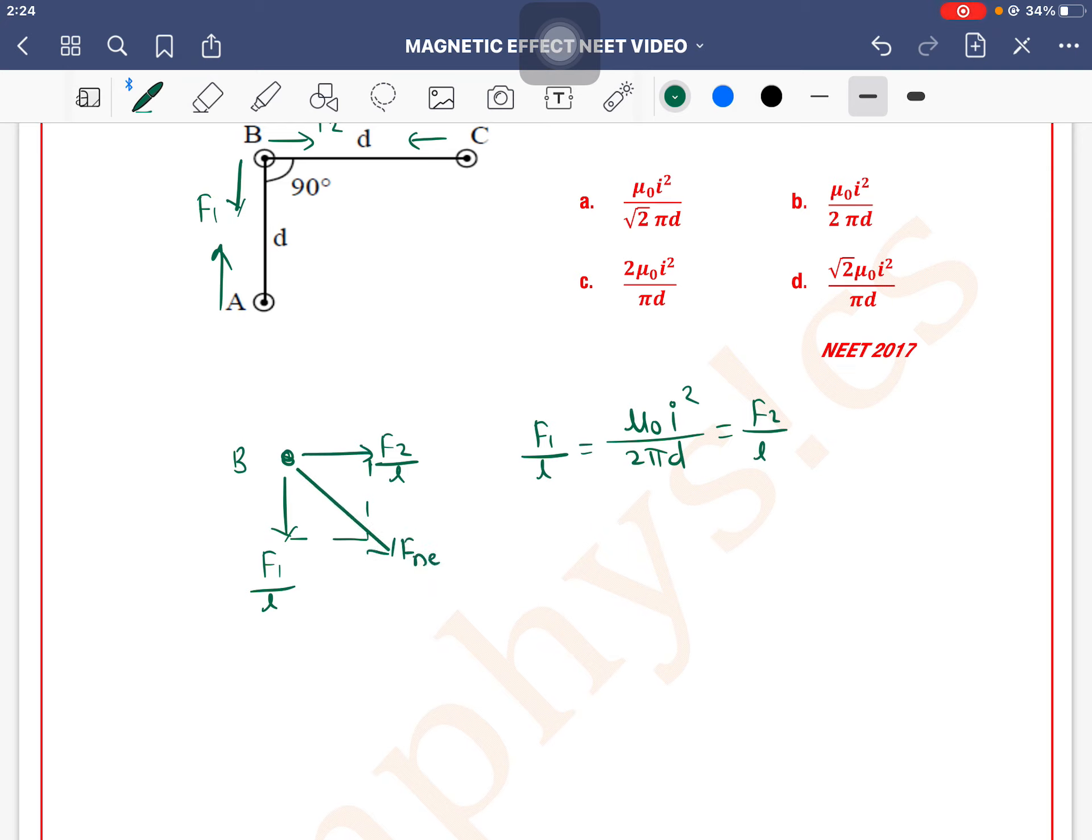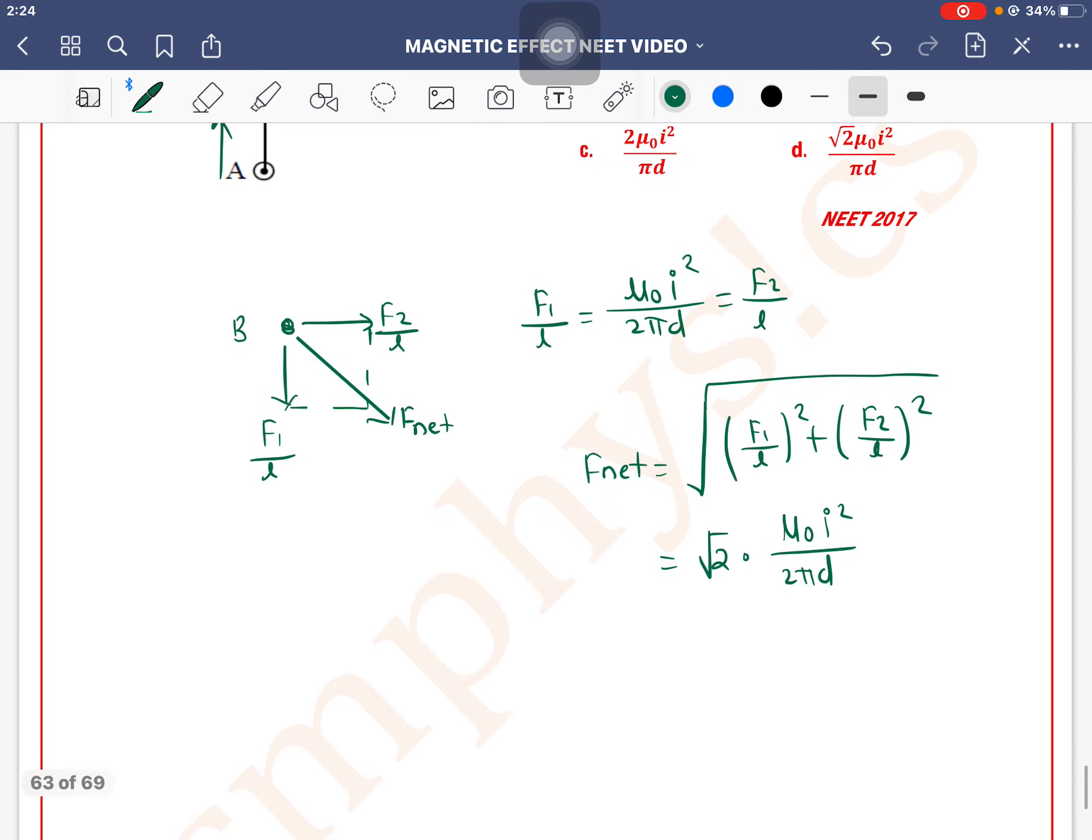The net force will be equal to, by using Pythagorean theorem, under root of F1 by L square plus F2 by L square. As both values are same, the answer is under root of 2 F1 by L, right? μ₀I² divided by 2πD.